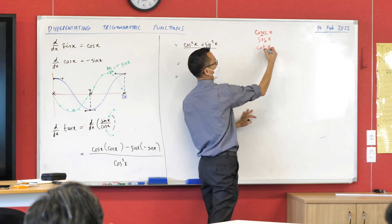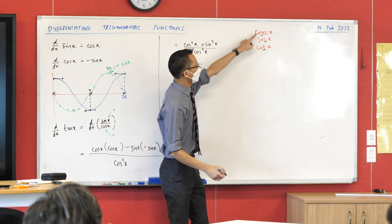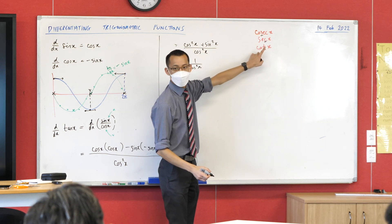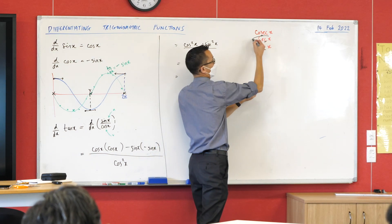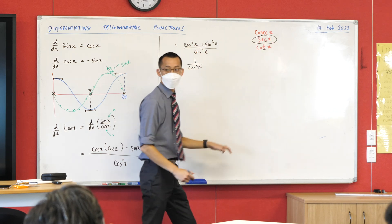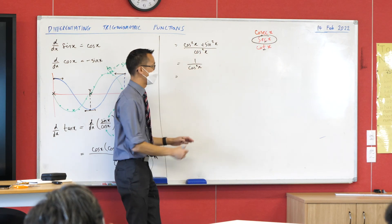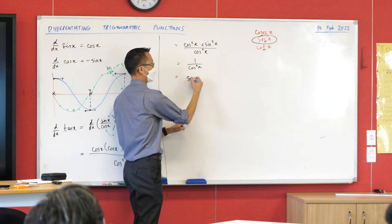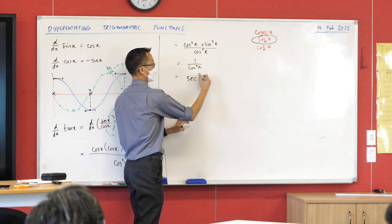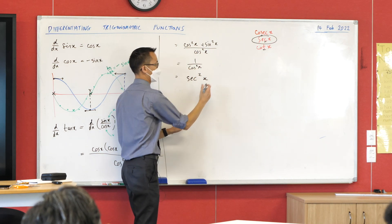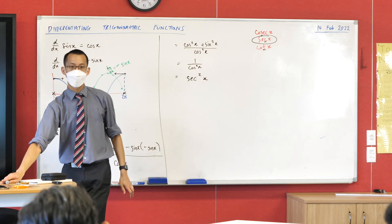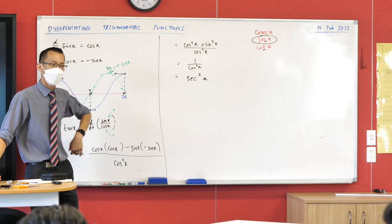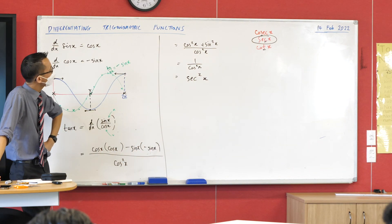Mathematicians being famously lazy, there's a name for 1 over cosine: it's one of the reciprocal functions. The trick for remembering which reciprocal is which is to look at the third letter — sine, cosine, tangent. For cosine you use 'sec', so 1 over cos squared x is written as sec squared x. That's the derivative of tan x — it equals sec squared x.